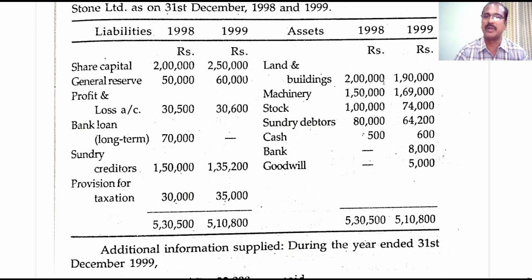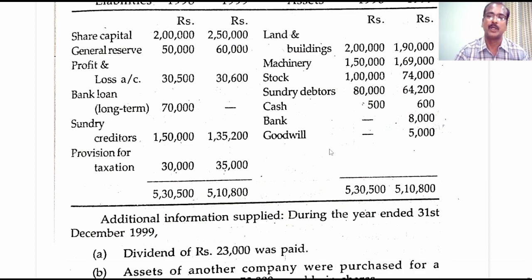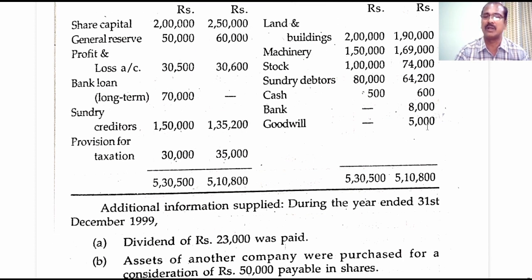Land and building is a fixed asset — opening and closing balances are given, and there is a decrease in the value of land and building amounting to 10,000 rupees. Machinery is another fixed asset — opening and closing balances are given, and we will prepare a ledger account to know the changes. Stock, sundry debtors, cash and bank balances are current assets and will be taken over to the schedule of changes in working capital. Goodwill shows an increase of 5,000; we will look at the additional information to decide the reason for this increase.